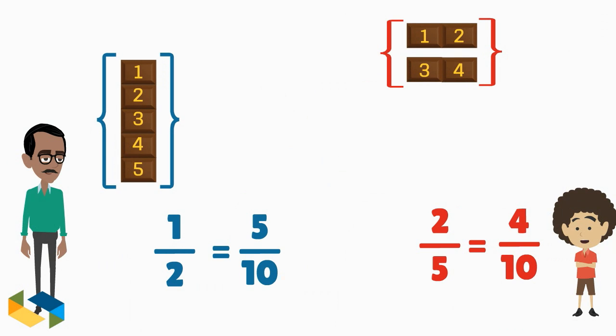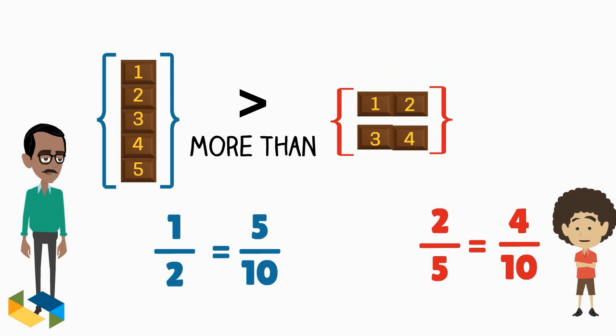Mr. Roy, it's now clear. The five pieces on the left are more than the four here on the right.